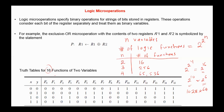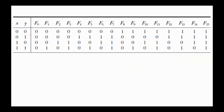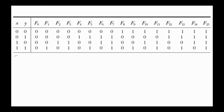This is the truth table for 16 functions of two variables, X and Y. The functions are named F0 through F15. From the truth table, you can note that any F-i equals the complement of F(15 minus i). For example, F0 and F15 are complements of each other, F1 is the complement of F14, etc. F0 equals 0 and does not depend on the values of X and Y, and this is the clear micro operation.